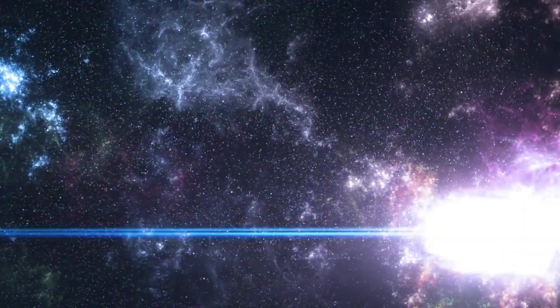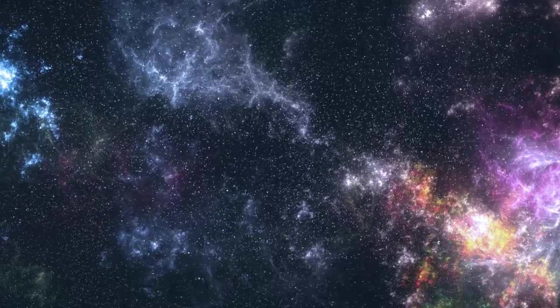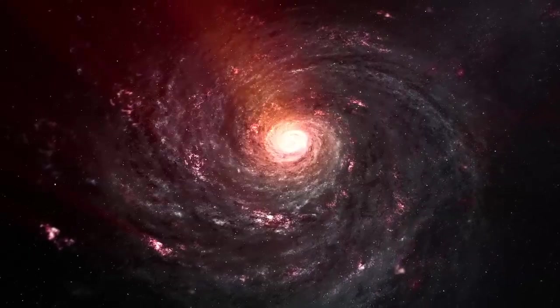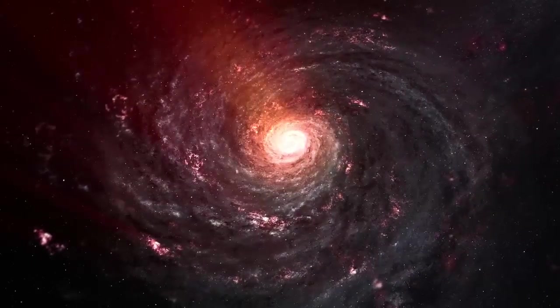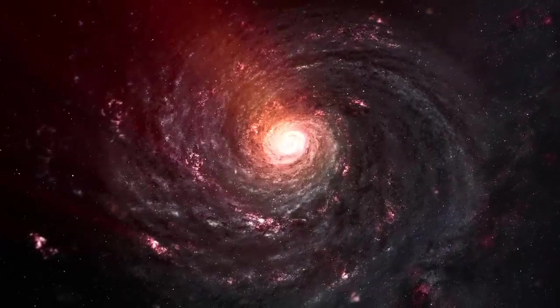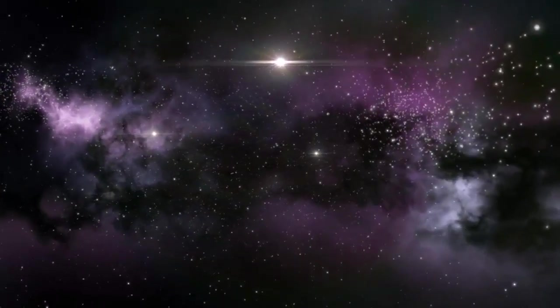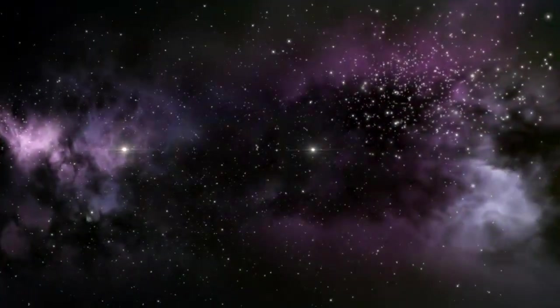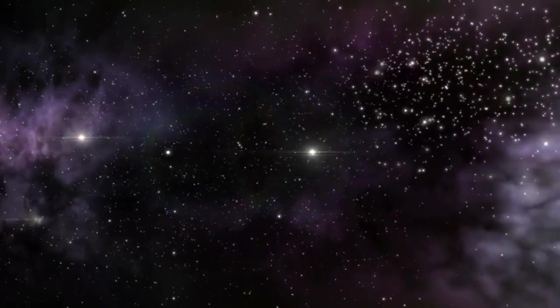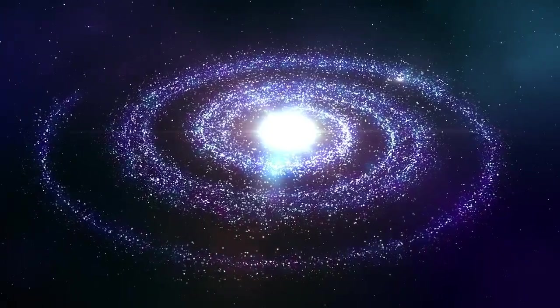Such a small number of supernova remnants points to an extremely young galaxy, definitely not billions or millions of years old, but rather thousands of years old. To put it another way, if evolutionists were correct about the age of the Earth, we would see tens of thousands of supernova remnants in our galaxy, not about 250.